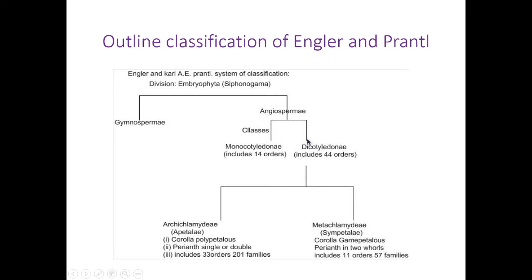The second group is angiosperm. Angio means concealed and sperma means seeds. Fruits are present and within the fruits you will get the seeds. That means the ovules are enclosed by the ovary. This is the meaning of angiosperm.